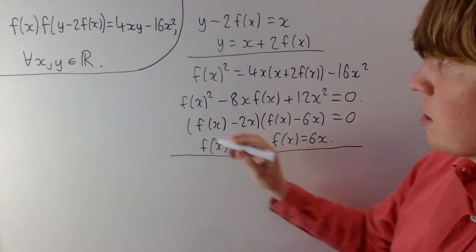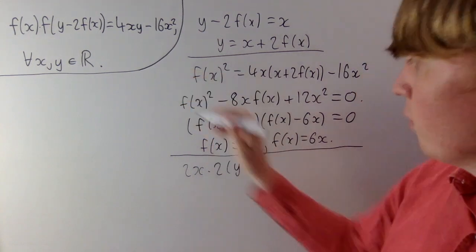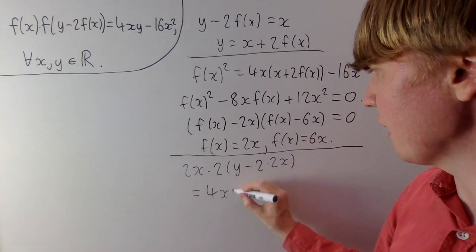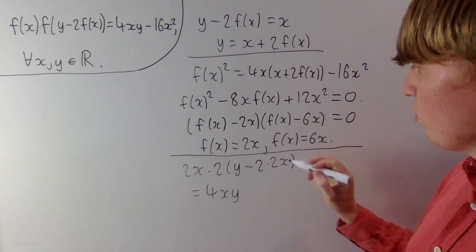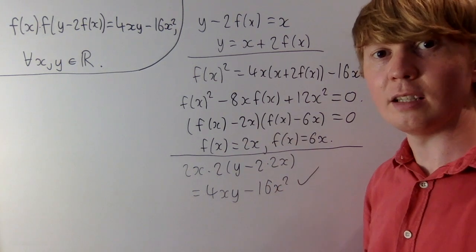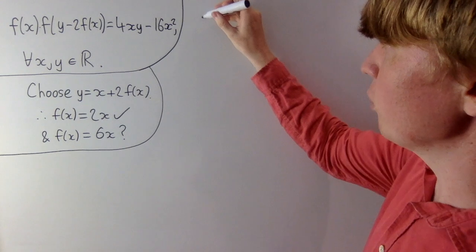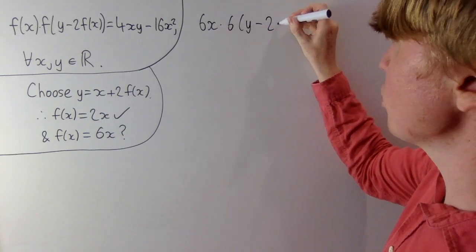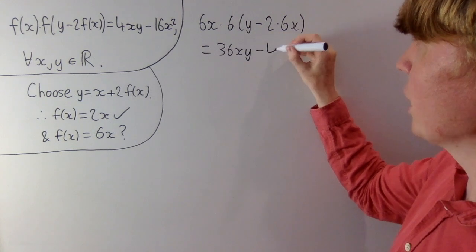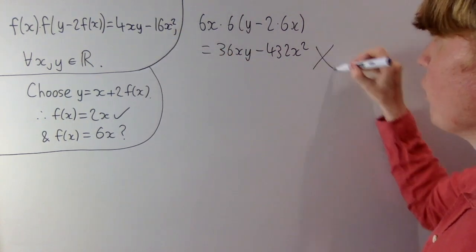Let's try f(x) equals 2x. Plugging in, on the left-hand side we get 2x times (y minus 2 times f(x)), which is 2x times (y minus 4x). Expanding: 2x times 2y gives 4xy, and 2x times minus 4x gives minus 16x², so f(x) equals 2x is indeed a valid solution. Now checking f(x) equals 6x: substituting into our original equation gives 6x times (6y minus 2 times 6x), and expanding we get 36xy minus 432x². This is nothing like what we wanted on the right-hand side, so 6x doesn't satisfy our original functional equation.